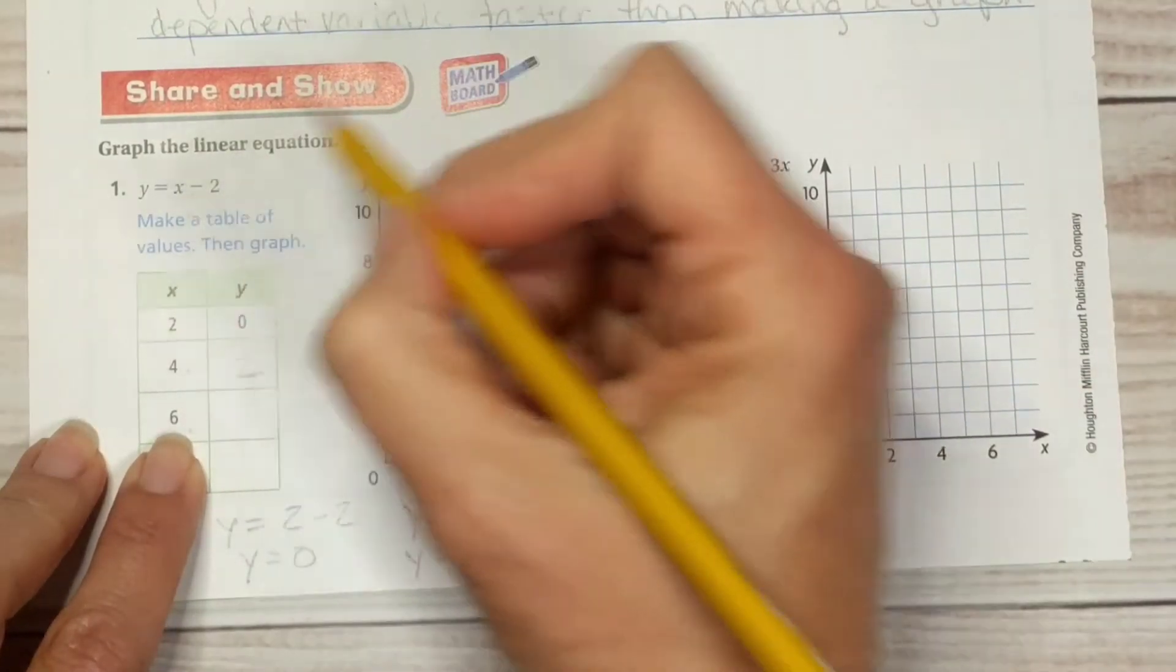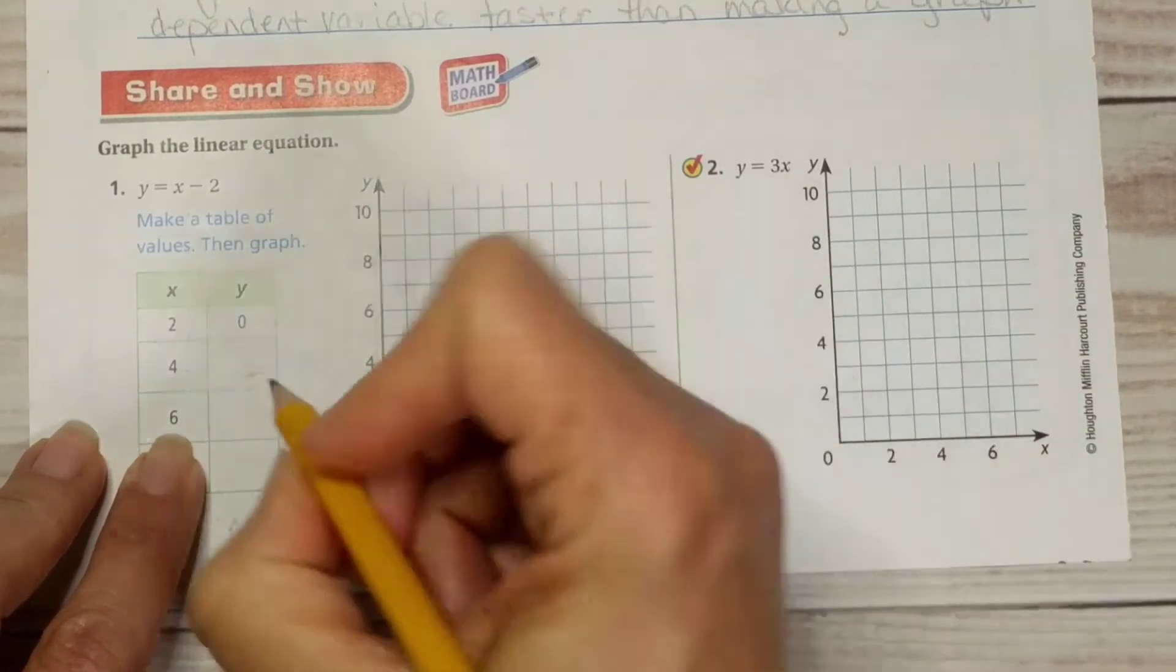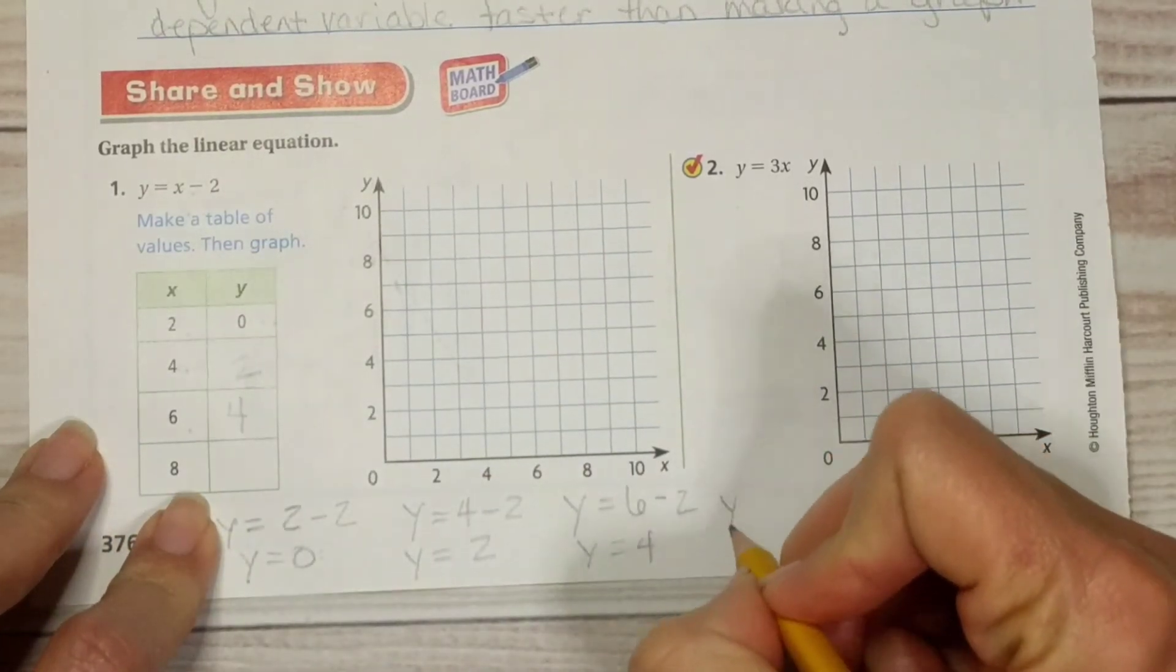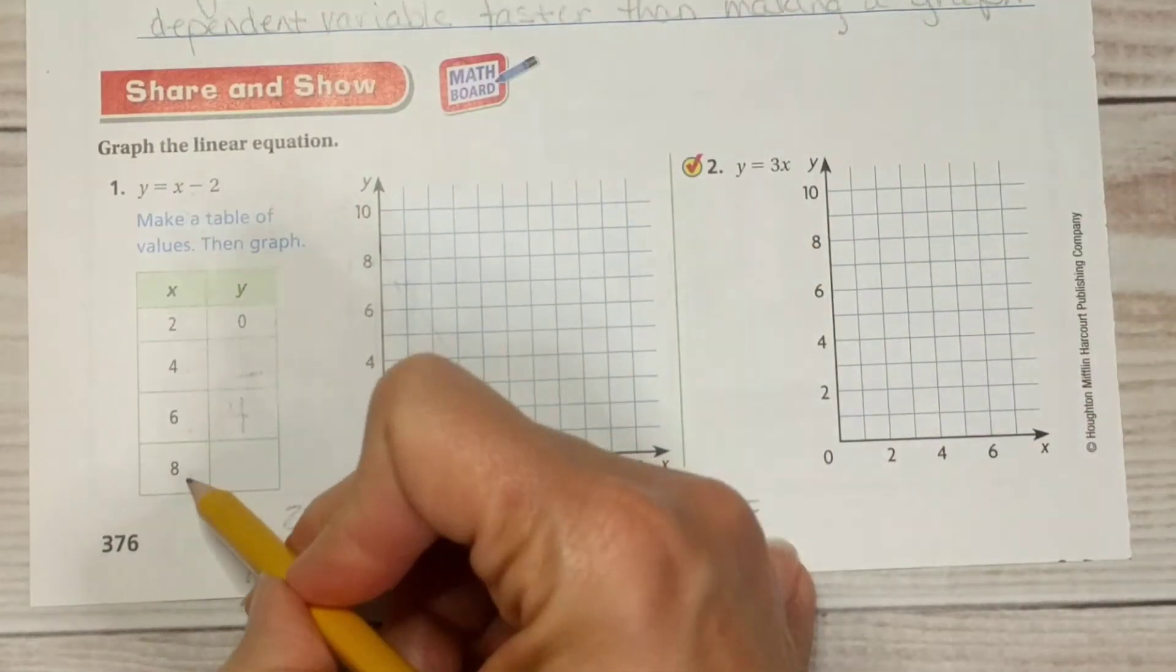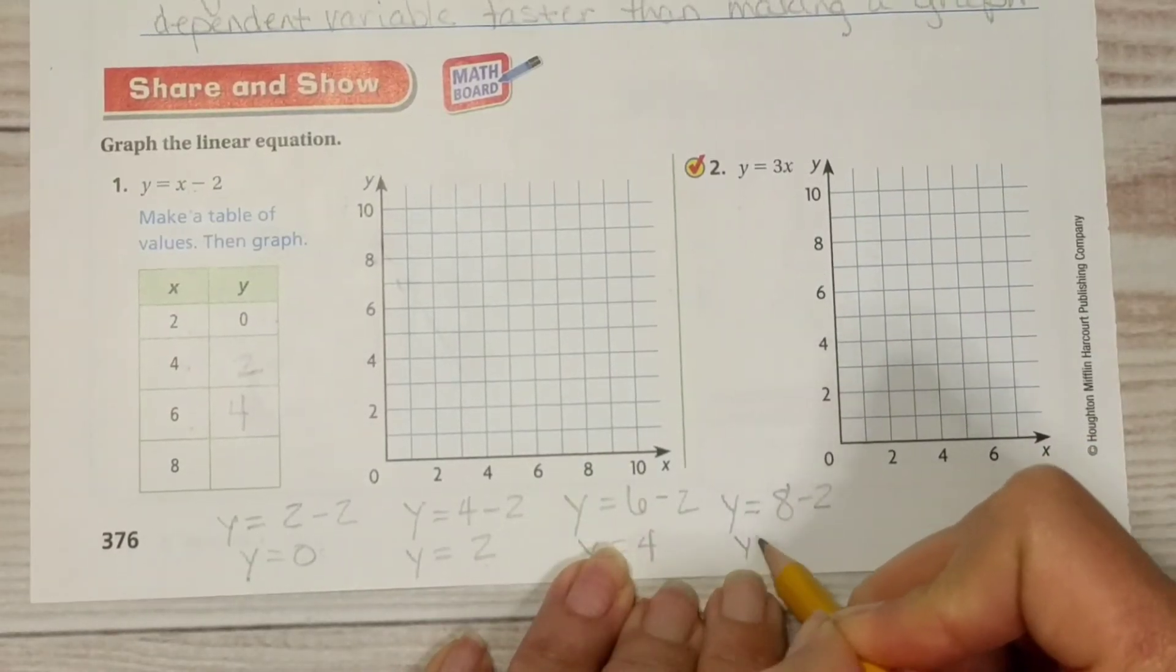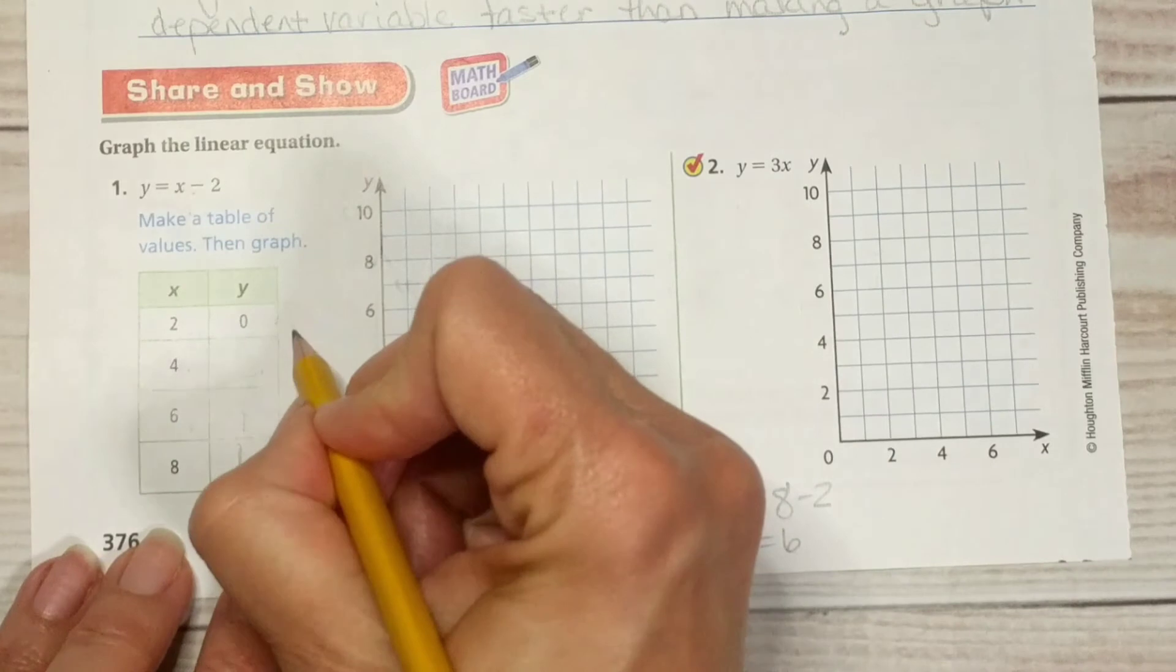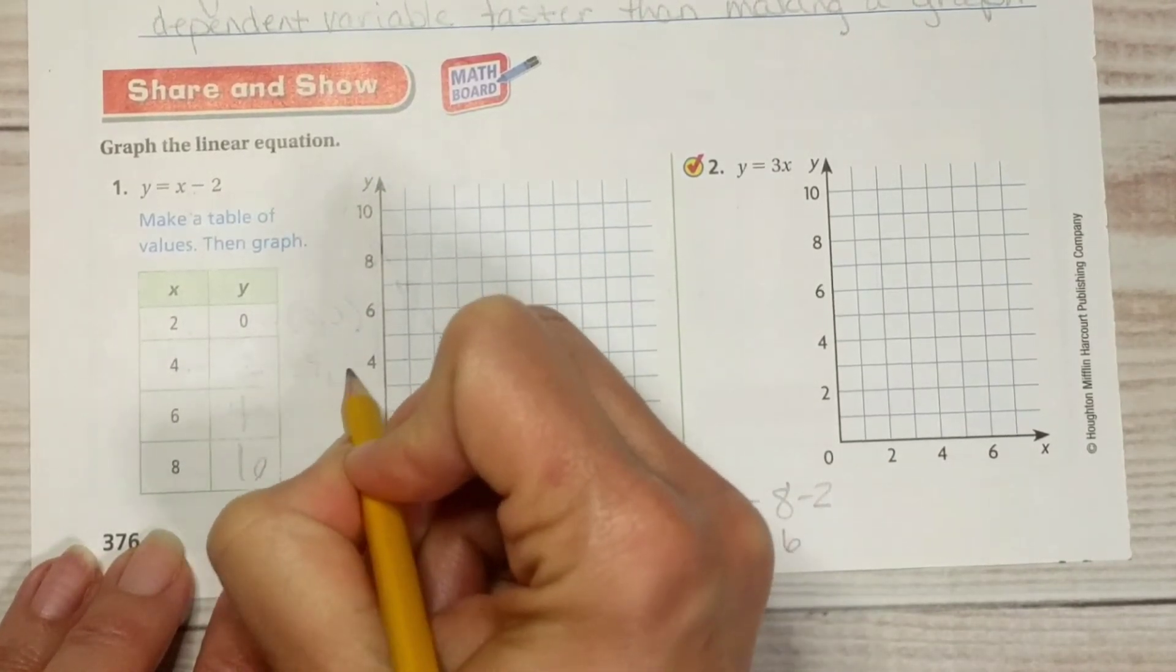All right so when x equals 2 minus 2 then y equals 0. That's where that came from. We substituted in this 2 for x did the operation and this came out 0. That's where that came from. Okay let's do another one. y equals we're going to substitute the 4 in for the x. 4 minus 2 and y equals 2 because 4 minus 2 is 2 so we're going to put a 2 right there.